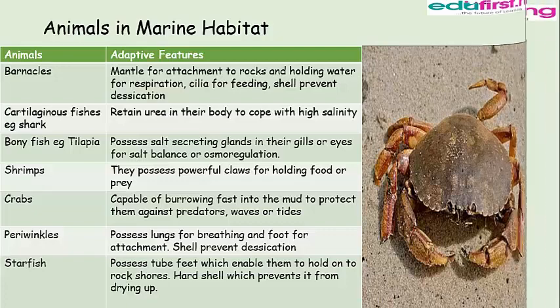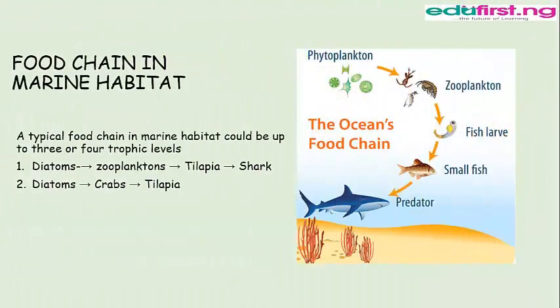Two major food chains in the marine habitat. A typical food chain can have up to three or four trophic levels. The first is: diatoms → zooplanktons → tilapia → sharks, as represented in the diagram. We also have: diatoms → crabs → tilapia, which represents a three trophic level food chain.